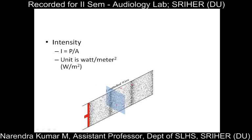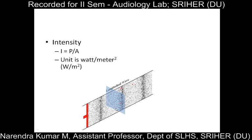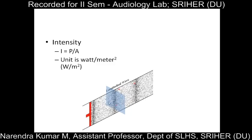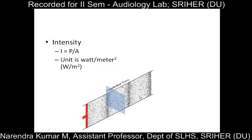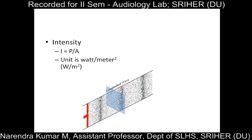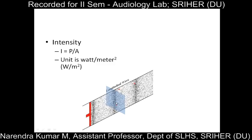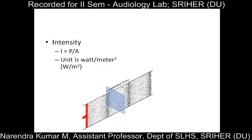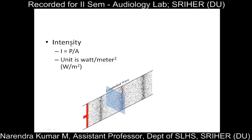If the power at a particular square is more, that indicates higher intensity. When the intensity is high, more amount of pressure change will occur and the resultant sound will be high amplitude sound waves. When the intensity is less, lesser displacement will happen, lesser work will be done, lesser amount of energy — so the sound intensity will be low and we'll perceive it as soft sounds.